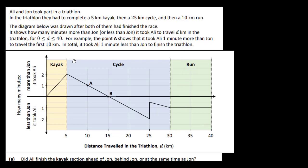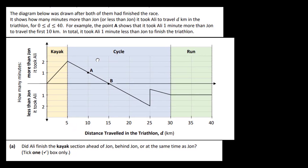The diagram below was drawn after both of them had finished the race. It shows how many minutes more than John, or less than John, it took Ali to travel d km in the triathlon, where d is between 0 and 40. For example, the point A shows that it took Ali one minute more than John to travel the first 10km. So this is the point A here, and you can see 10km out to here, and Ali has taken one minute, this is one minute here, more than John at this point in the race.